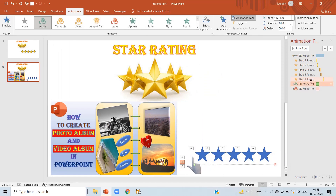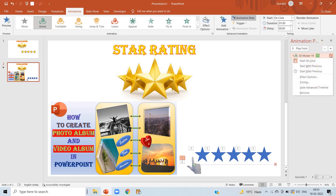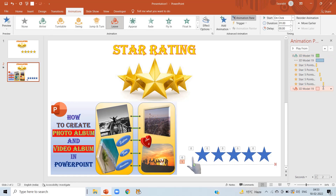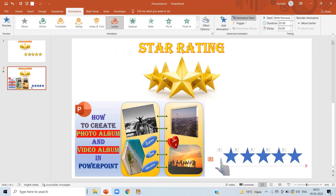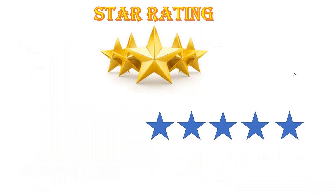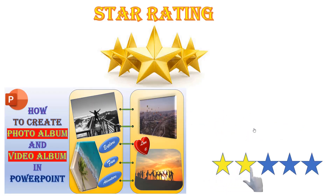In the Animation Pane, move the entrance animation to the top and make it Start With Previous, or you can make it Start On Click — your choice. The exit animation at the end should also Start With Previous. Now let me show how it looks: the first method is manual where I'm giving four-star rating, and the second method shows the hand appearing, swiping to give the rating, then disappearing.